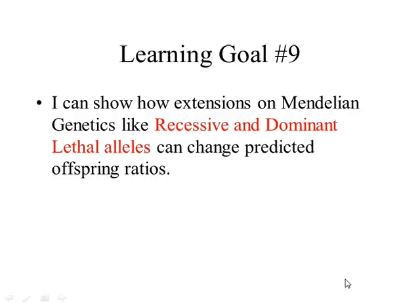Hi, welcome back. Today we're going to focus on learning goal number nine. We're looking at ways we can build on what we already know from Mendel and focus on some of the things that Mendel didn't know. Mendel didn't know about recessive and dominant lethal alleles and the ways that they change our predicted offspring ratios.